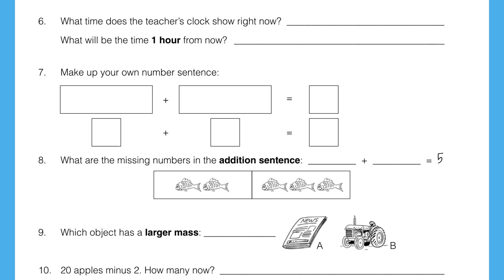Question 10. 20 apples minus 2 apples — how many apples now? Your answer should be a number — the number of apples — plus the title of the answer, which would be 'apples.' Make sure you write the word 'apples' after the number of apples that you think the answer should be.